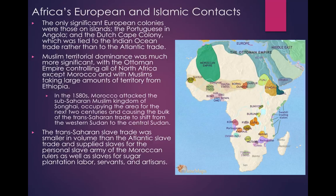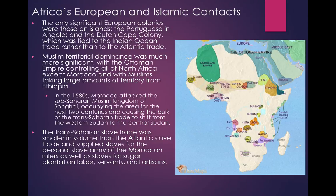Muslim territorial dominance was much more significant, with the Ottoman Empire controlling all of North Africa except Morocco, and with Muslims taking large amounts of territory from Ethiopia. In the 1580s, Morocco attacked the sub-Saharan Muslim kingdom of Songhai, occupying the area for the next two centuries and causing the bulk of the trans-Saharan trade to shift from Western Sudan to Central Sudan. The trans-Saharan slave trade was smaller in volume than the Atlantic slave trade, and supplied slaves for the personal slave army of the Moroccan rulers, as well as for sugar plantation labor, servants, and artisans. The majority of slaves transported across the Sahara were women destined for service as concubines or servants, and children, including eunuchs, meant for service as harem guards. The fall of Songhai brought periods of violent Islamization — Islamic elites versus animistic natives — and violence helped supply slaves to coastal regions.